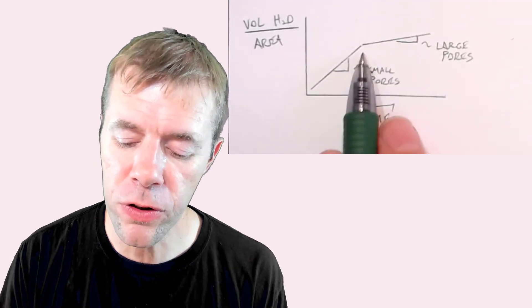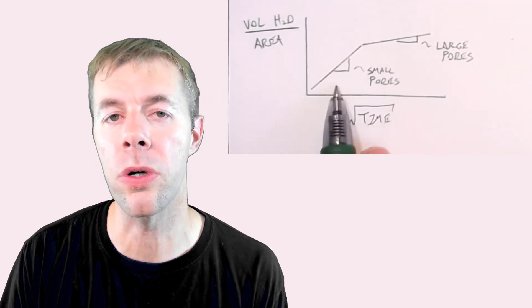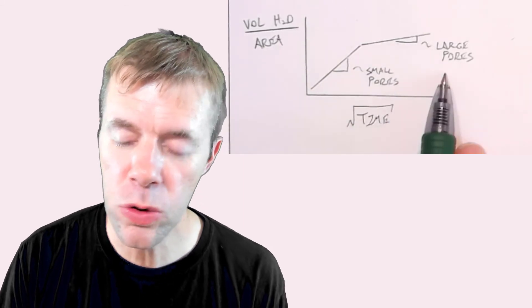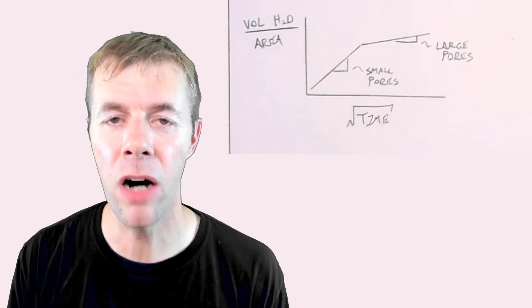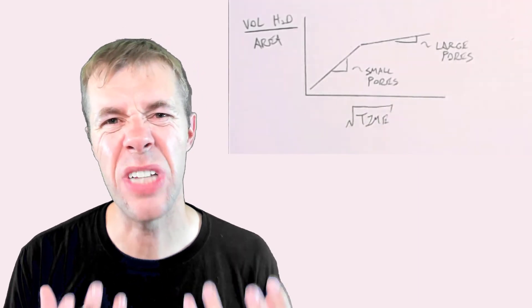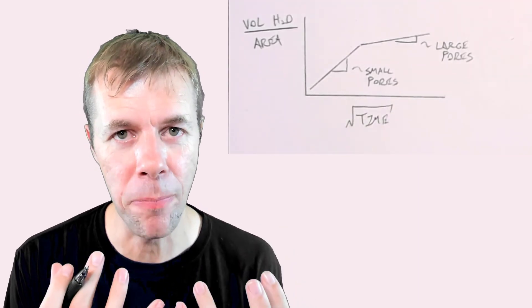You'll actually see there's two lines. The first line, the first slope, tells you about the smaller pores. The second slope tells you something about the larger pores. Some kind of idea on how this water goes into this concrete and fills it up.